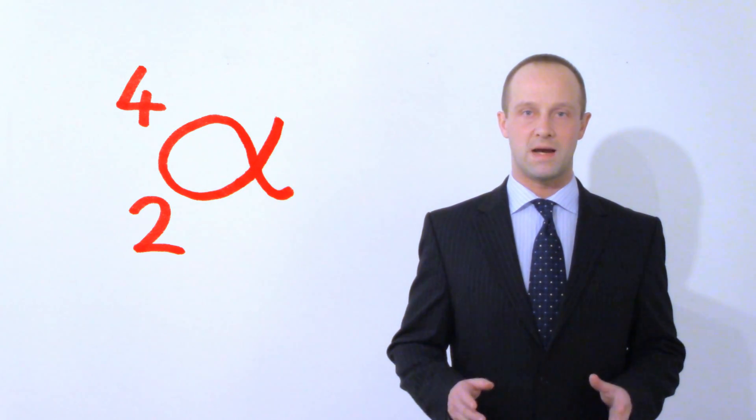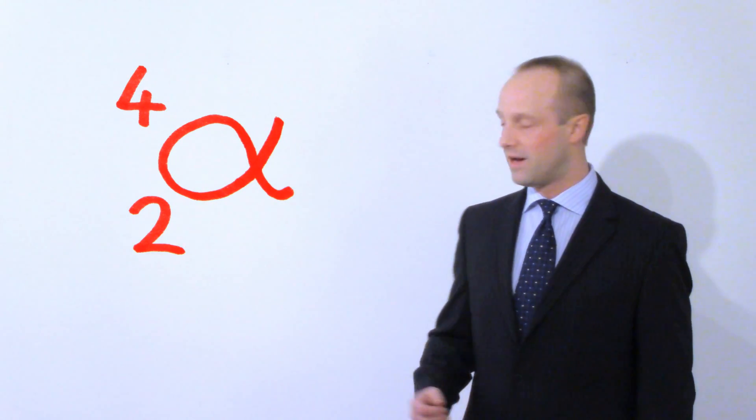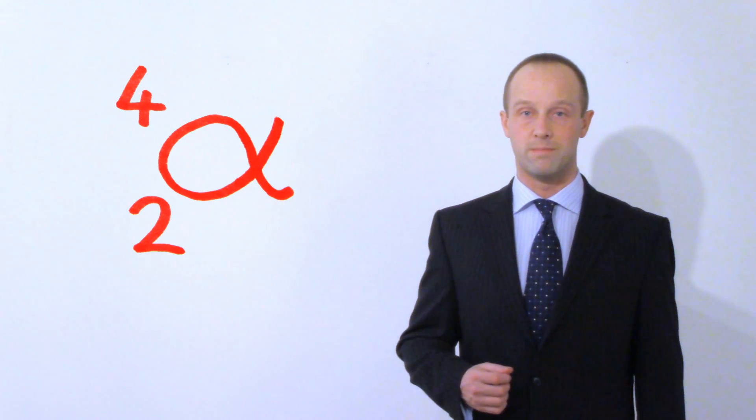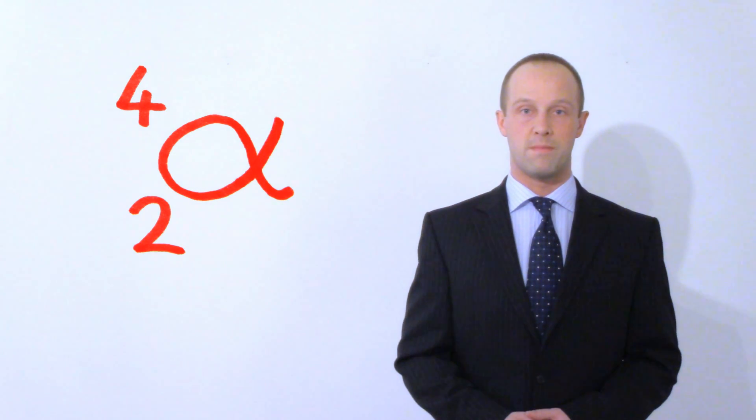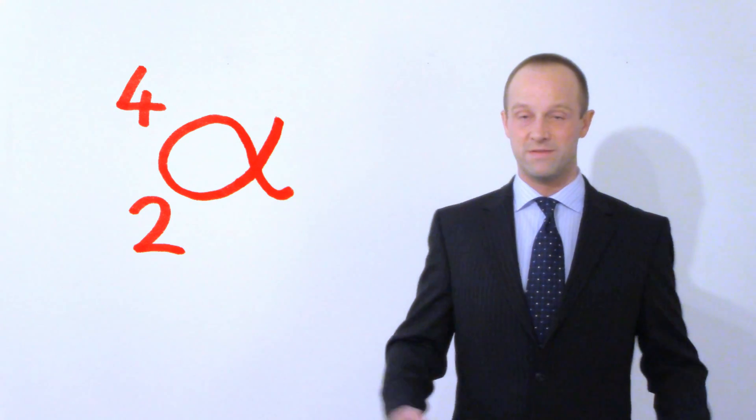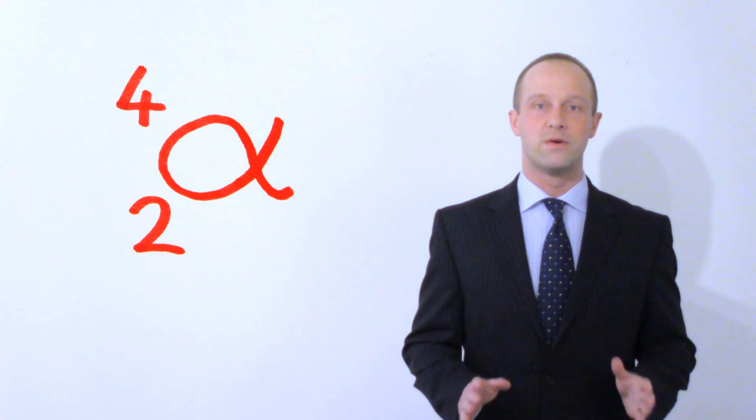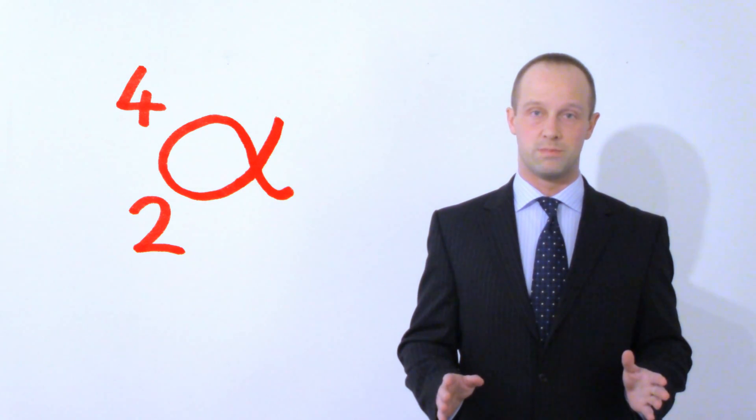Now, because our thorium atom has lost this, it's lost four from its mass and it's lost two from the proton number, we subtract four from the mass number and we subtract two from the proton number. It's that simple. You've taken away two protons, you've taken away four units of mass altogether and so, in doing that, you've reduced both of those numbers.